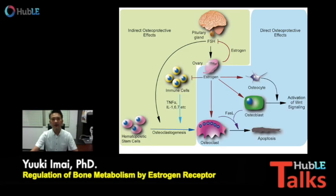Taken together, estrogen via ER alpha can directly regulate bone metabolisms through all cell types in bone tissues, as shown in the right side panel in this slide. Also, estrogen can indirectly control bone metabolisms through other organs or tissues such as brain, immune cells, microbiota, and so on, as shown in the left side panel.